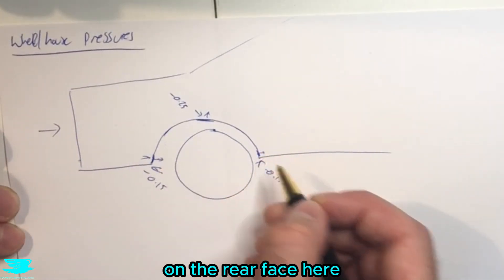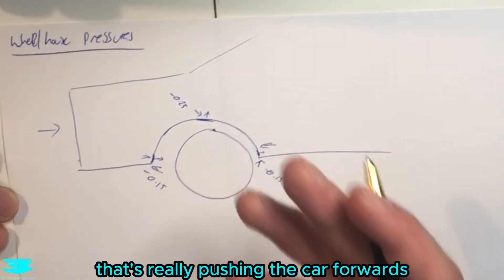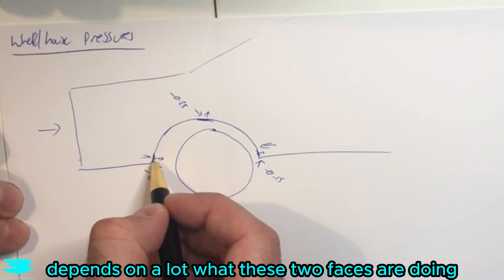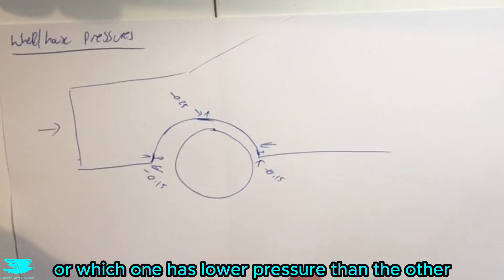Alternatively, on the rear face here, because we have low pressure back here, that's really pushing the car forwards. So whether or not the wheelhouse is producing more or less drag depends a lot on what these two faces are doing and whether they cancel out or which one has lower pressure than the other.